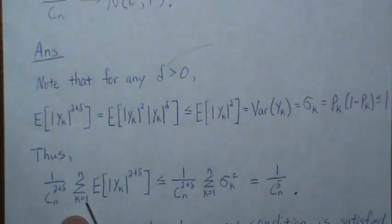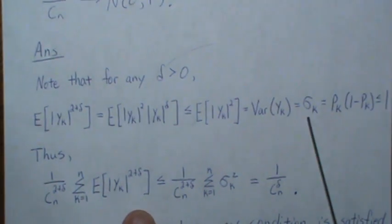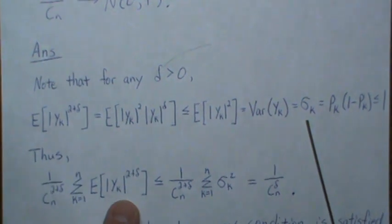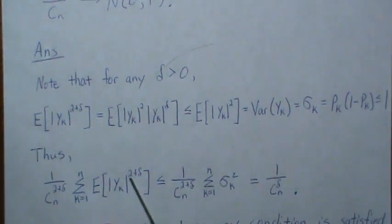So if we now look at the Lyapunov condition where we sum from k equals one to n of this condition divided by cn raised to the two plus delta.